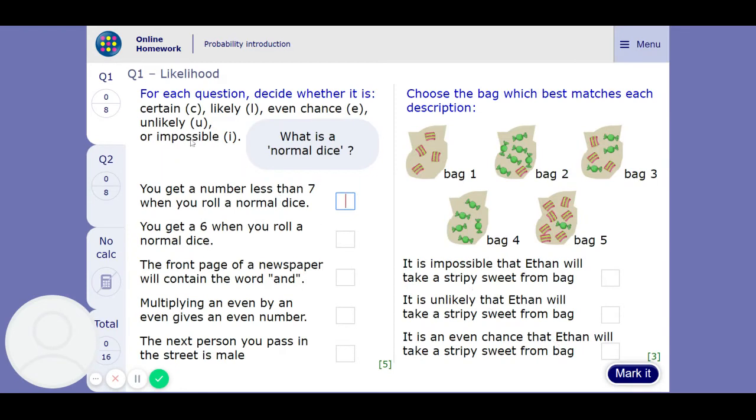Okay, so likelihood. For each question, decide whether it is certain C, likely L, even chance E, unlikely U, or impossible I. What is a normal dice? So a normal dice has got the numbers 1 to 6 on it, and they're all equally likely to come up.